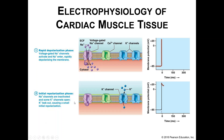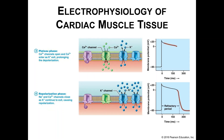Next we have the initial repolarization phase. Your sodium channels are inactivated and closed, so no more sodium rushes into the cell. We start to open some potassium channels, and some intracellular potassium escapes into the extracellular fluid. We start to slightly work our way back down toward resting membrane potential. Then we get something different — a plateau phase. This plateau phase is something we did not see in skeletal muscle contraction. This is unique to cardiac muscle.